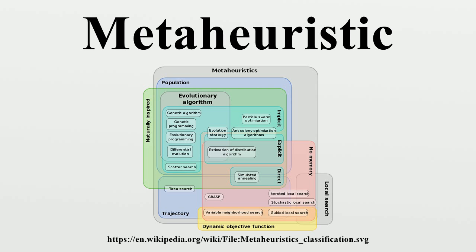Parallel meta-heuristics: A parallel meta-heuristic is one which uses the techniques of parallel programming to run multiple meta-heuristic searches in parallel. These may range from simple distributed schemes to concurrent search runs that interact to improve the overall solution.